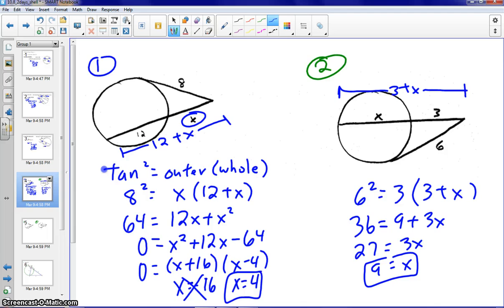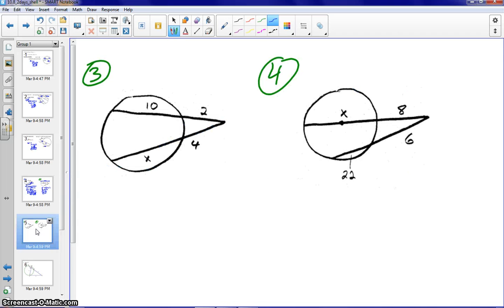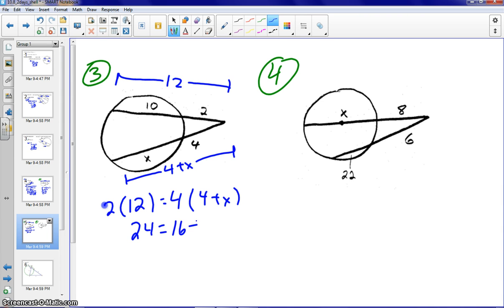On our third example, this is an example of a secant-secant. So outer times whole equals outer times whole. So we would have 2 times 12. The whole secant would be 12. And 4 times 4 plus X. So again, outer times whole equals outer times whole. And as we solve this one, you'll see that we get X equal to 2.